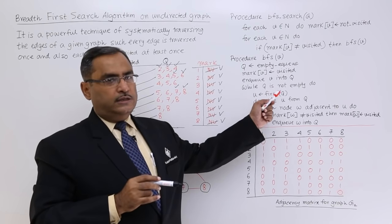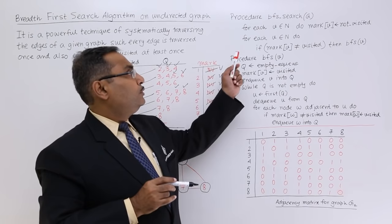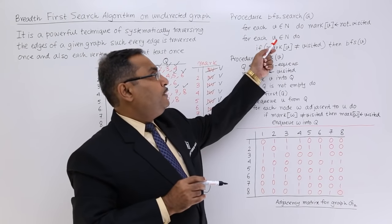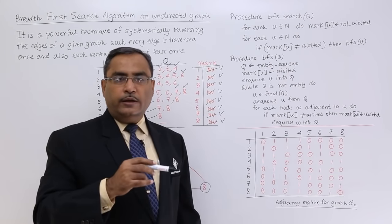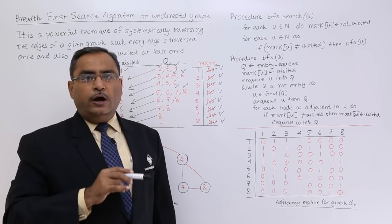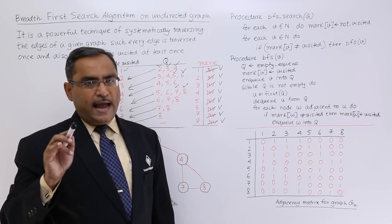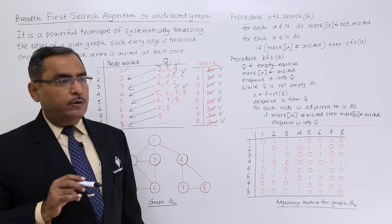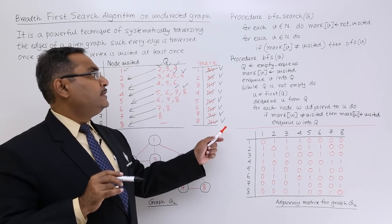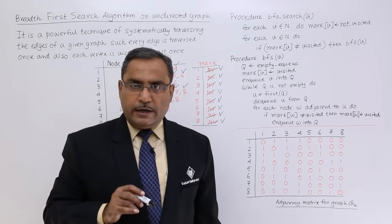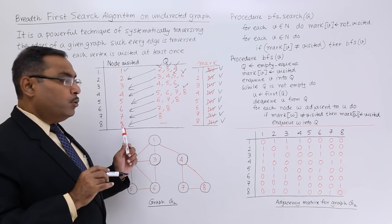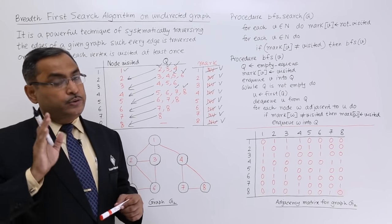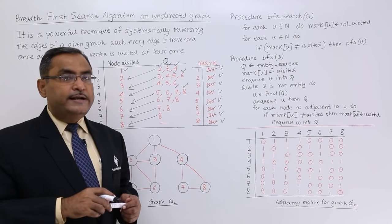When the Q becomes empty, the while loop cannot continue and control returns to the caller function. The outer for loop continues checking vertices 2 through 8, but none of them has mark of V not equal to visited because all have been visited. The algorithm terminates. The traversal sequence is 1, 2, 3, 4, 5, 6, 7, 8 — quite different from the sequence obtained with the DFS algorithm.